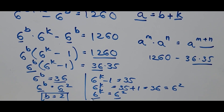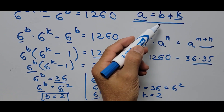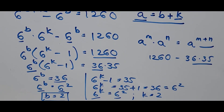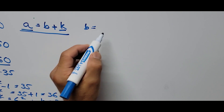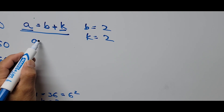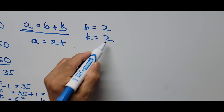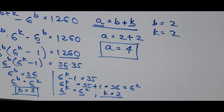Since 36 is 6 squared and we have the same base, K equals 2. To get the value of A, since A equals B plus K, and B equals 2 and K equals 2, we substitute: A equals 2 plus 2, so A equals 4.